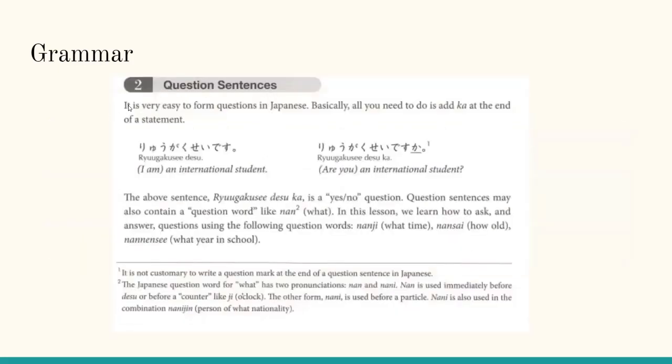Question sentences: It is very easy to form questions in Japanese. Basically, all you need to do is add ka at the end of a statement. Ryuugakusei desu would mean I am an international student, while ryuugakusei desu ka would mean are you an international student. The above sentence, ryuugakusei desu ka, is a yes-no question.